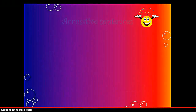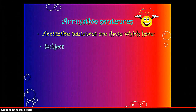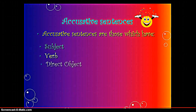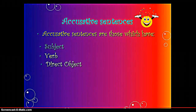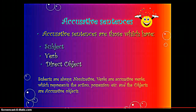Let's now learn what Accusative sentences are. Accusative sentences are those which have one subject, one verb, and a direct object. The subject is always Nominative, as we have discussed earlier. But the verbs in this case are Accusative verbs, which represent action or possession. And the objects are Accusative objects.